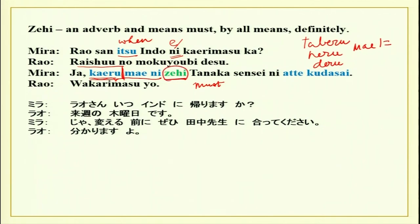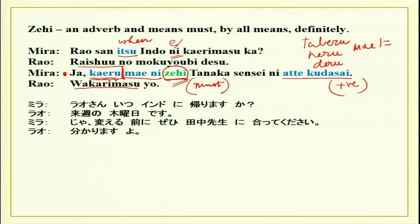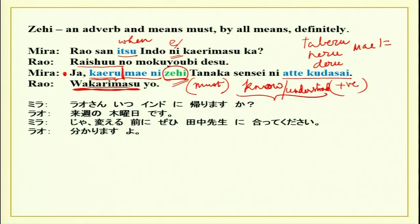Mae ni will take plain form of the verb. Zehi means must and is always used with a positive verb — zehi ikimasen and zehi tabemasen are not used. Zehi tabete kudasai, zehi mite kudasai — kono atarashii eiga zehi mite kudasai. Please watch it. Wakarimasu yo — I have understood, of course I know.